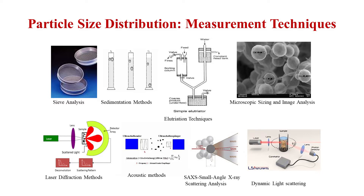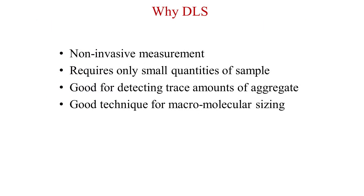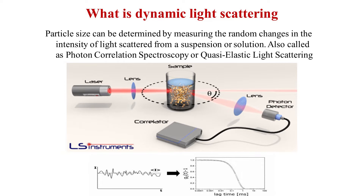Now we are looking at measurement using the DLS method — Dynamic Light Scattering. Why DLS? Because in DLS we need very small sample quantities, it is a non-invasive method, it is good for detecting trace amounts of aggregates, and it is good for macromolecular sizing. How does dynamic light scattering work? When we take a suspension of particles and pass a laser through the particles, the incident laser light scatters. These scattered intensities are recorded and measured by detectors, and the change in intensity is used to measure the particle size.